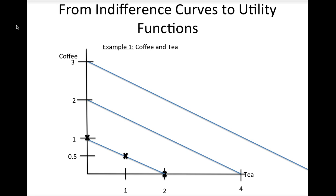Let x1 represent tea and x2 represent coffee. Since higher numerical values represent higher levels of utility, we can exploit this information by letting the vertical intercept of each indifference curve represent the utility level associated with that curve. So the first curve would represent all combinations of coffee and tea that give the consumer a utility of 1, the second curve a utility of 2, the third a utility of 3, and so on. Remember, the numerical values we assign as utility levels for each indifference curve are arbitrary, as long as higher curves have higher utility numbers, but the vertical intercepts are natural choices of values to use.